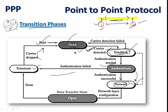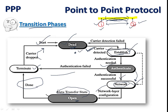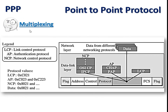If authentication passes, the network is configured and data transfer begins — this is the open state. Once all data has been transmitted between the two points, the process is complete. After final data transmission, the state transitions to terminate and then returns to dead state.